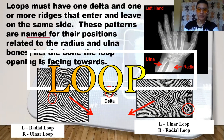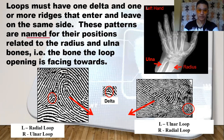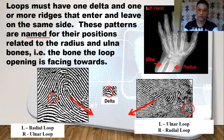The first topic I will be discussing is the fingerprint pattern. One of the fingerprint patterns is the loop. Loops must have one delta and one or more ridges that enter and leave on the same side. These patterns are named for their positions related to the radius and ulna bones. Here is a figure showing the hand where the ulna bone and radius bone are located, providing further illustration to determine when we can say it is a radial or ulnar loop.